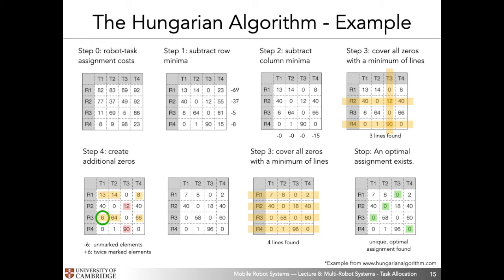Most numerical software libraries have a function for the Hungarian algorithm, so you rarely need to implement it yourself. For those curious and wanting a deeper understanding, I encourage you to look at the proofs for why this algorithm produces an optimal assignment and why it works in O(n³).